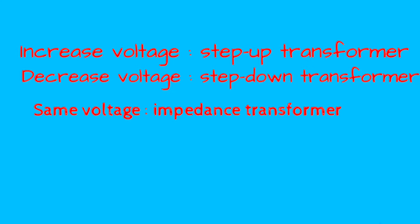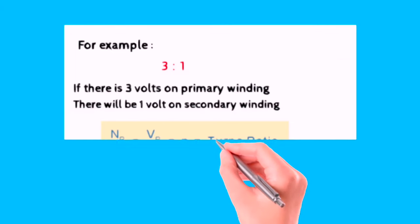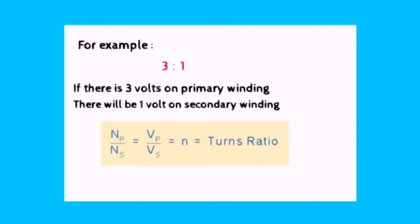It is necessary to know the ratio of number of turns of coils. For example, if the ratio of number of turns in the coils is 3 to 1, this means if there is 3 volts on primary winding, then there will be 1 volt on secondary winding. Then we can say that if ratio of number of turns changes, then the resulting voltage must also change by the same ratio.